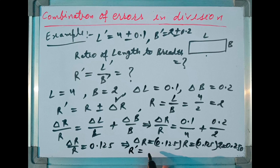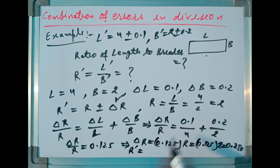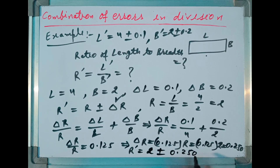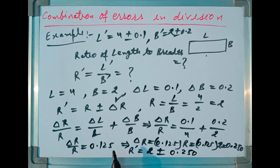So the required answer is R dash equal to R plus or minus Delta R, which is 2 plus or minus 0.250. This is how we can make use of the rule for combination of errors in division of two quantities.